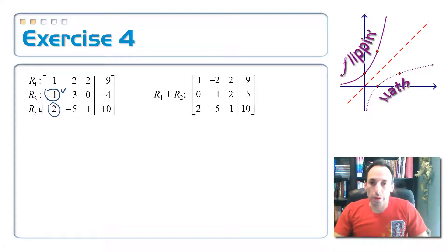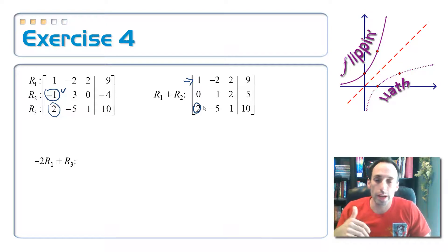Now, I have to get rid of this 2 right here. In order to get rid of that 2, the only row that I could use to eliminate it is the top row. But the coefficients are 1. I need it to be the exact opposite of the 2, so I need to multiply row 1 by negative 2 and add it to row 3 to replace row 3.